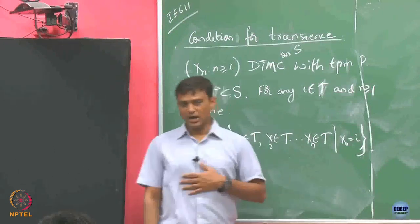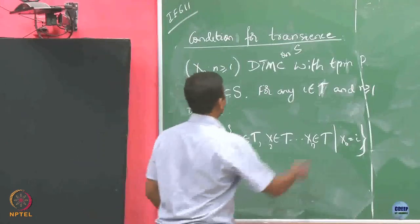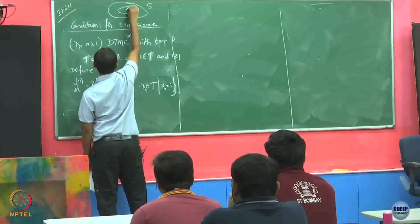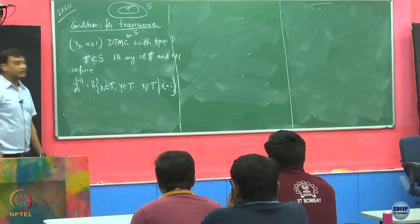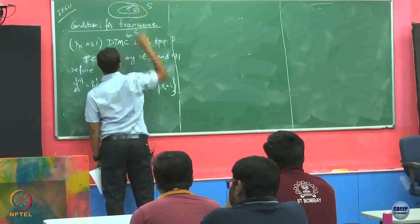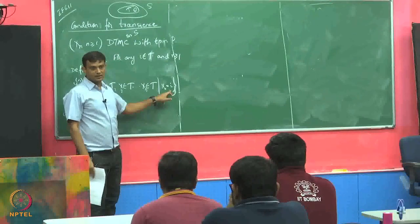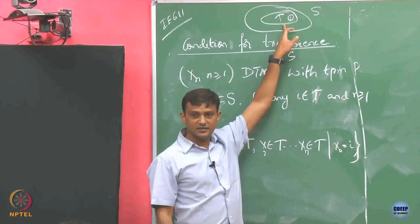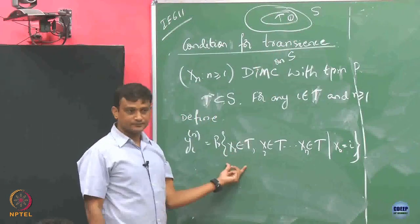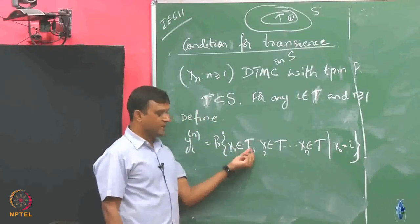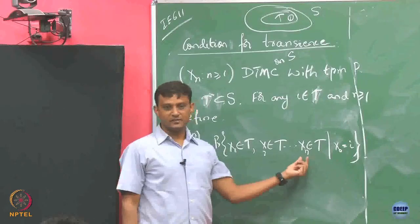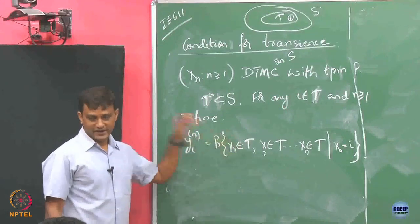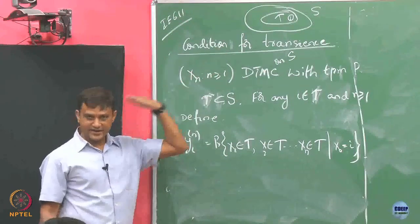You have your big state space S, take some subspace in this which is my tau T. You take a particular state i in this, you start from that state i, and now I am asking you what is the probability that you continue to remain in this subset only. I start with i, in the first step I remain in T, second step I remain in T, till the nth step also I remain in T. I do not care about what happens there, but at least for a given n, I am only talking about starting from i in this class and remaining in this class for the next n rounds.